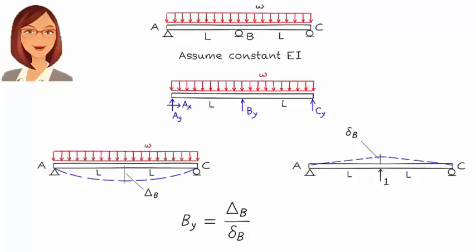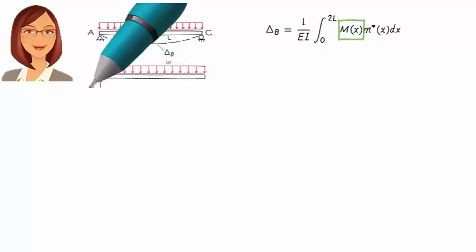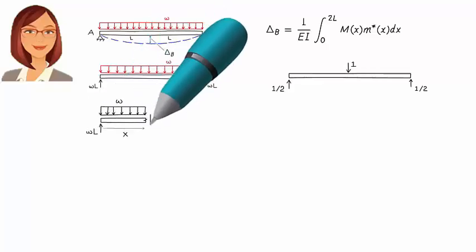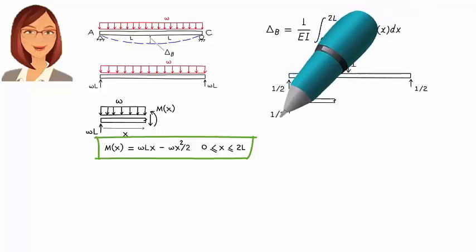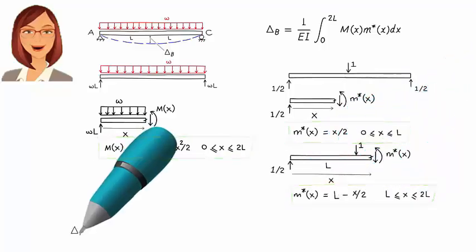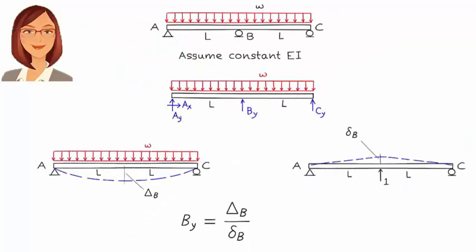To calculate these displacements, we are going to use the method of virtual work. Here I am going to use the method without explaining it — for details of the virtual work method, see Lecture 22. We can calculate delta_B using this equation, where M represents the bending moment equation in the beam due to the distributed load, and M* represents the bending moment in the beam due to a unit load applied in the direction of the displacement at B.